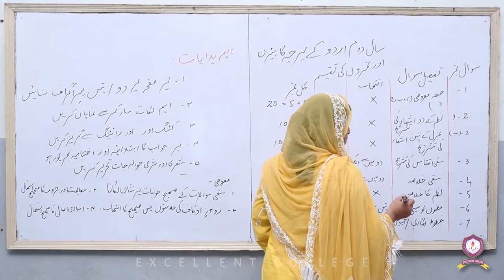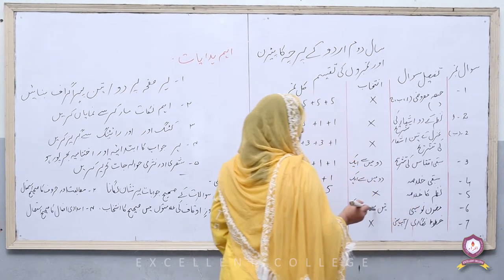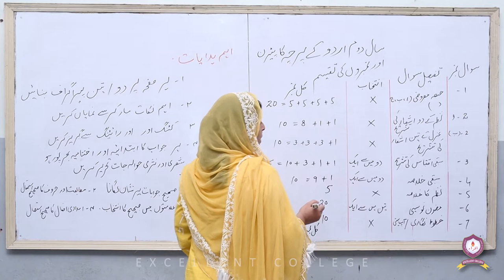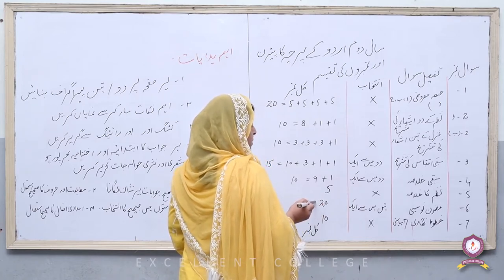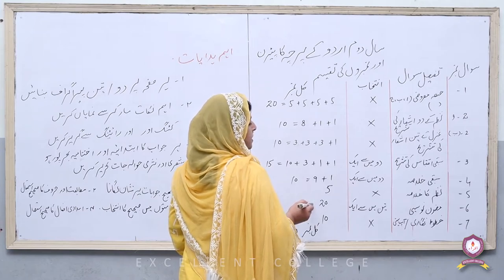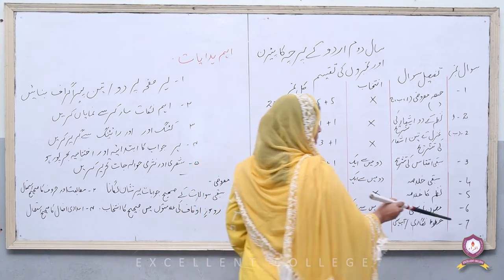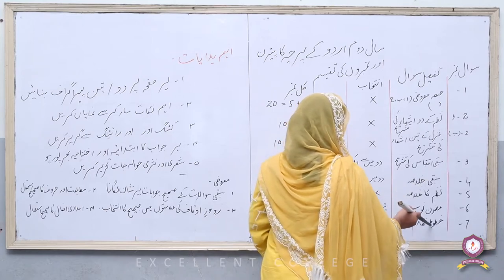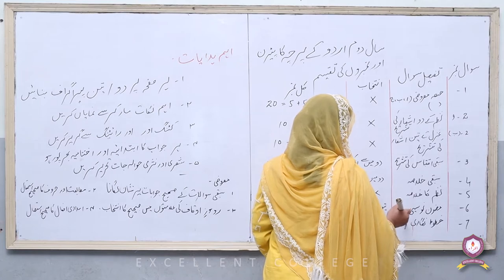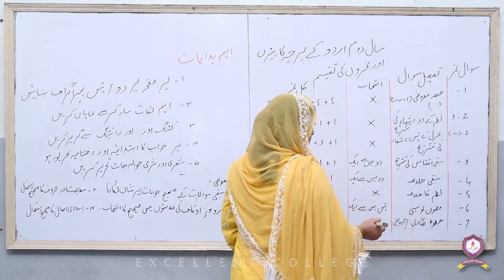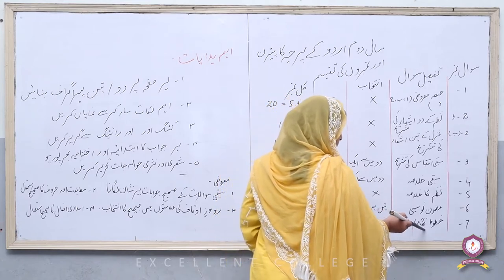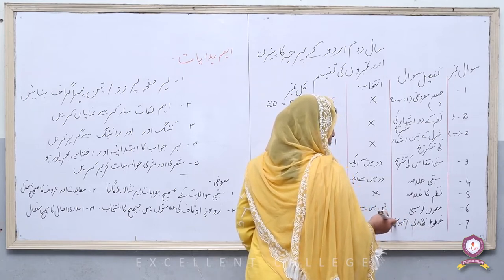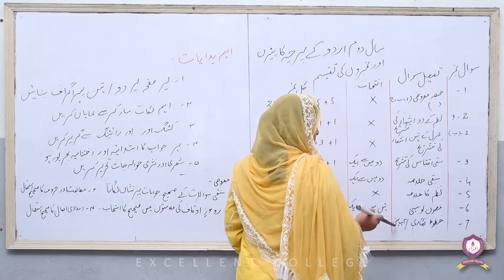سوال نمبر چھ بہت اہم اور نمبروں سے بھرپور ہے — مضمون نویسی۔ اس میں تین مضامین آئیں گے، تین میں سے ایک منتخب کرنا ہوگا اور اس کے نمبر بیس ہیں۔ جتنے زیادہ نمبر ہوں گے اتنی زیادہ محنت اور تفصیل کے ساتھ سوال حل کریں گے۔ آخری سوال نمبر سات: خطوط نگاری یا درخواست۔ اس میں خط یا درخواست آ سکتی ہے، کوئی چائس نہیں — ہمارے اس سلیبس میں دونوں شامل ہیں۔